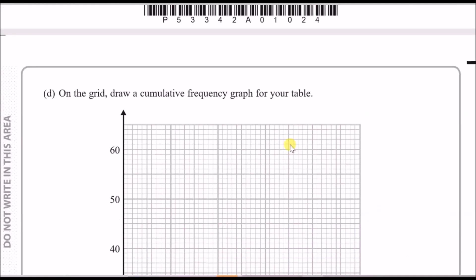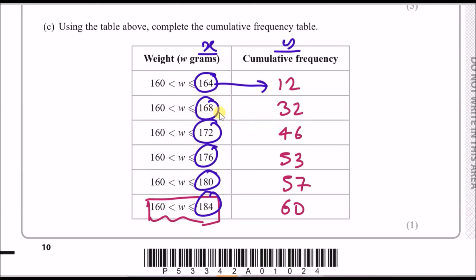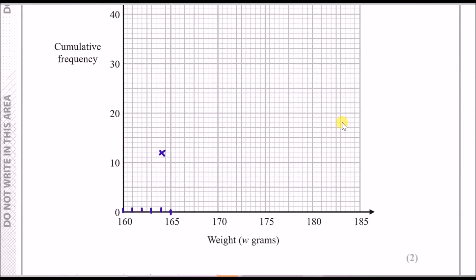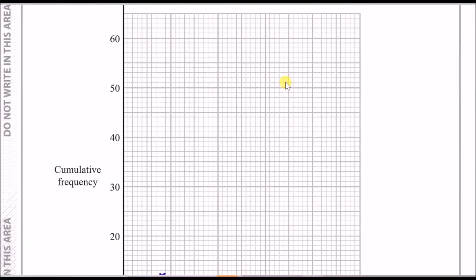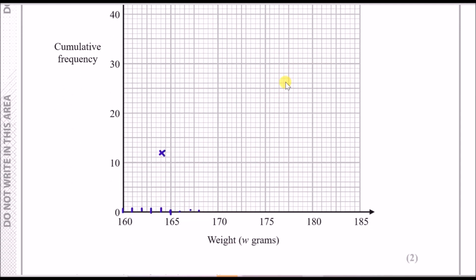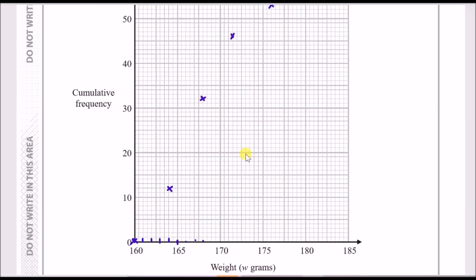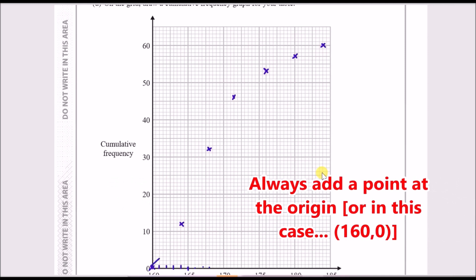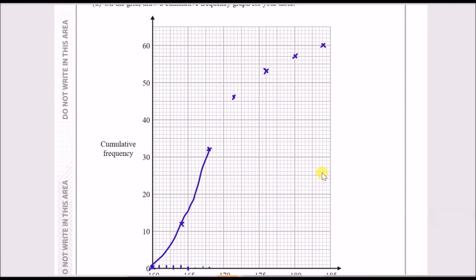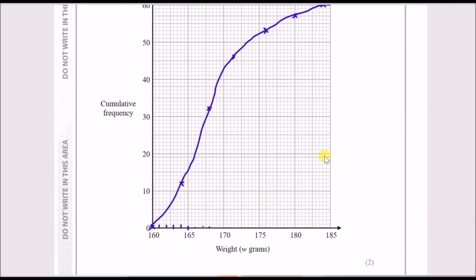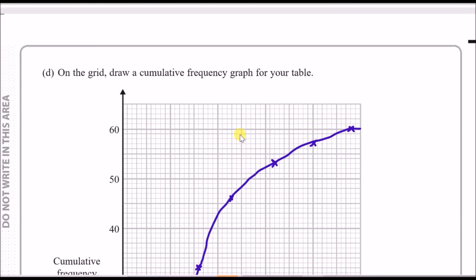Continue plotting all the remaining points: 168 to 32, and so on. Once all points are plotted, draw a smooth S-shaped curve through them to complete the cumulative frequency graph. That finishes part d.